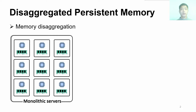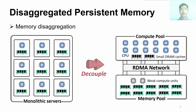To avoid these drawbacks, memory disaggregation decouples the compute and memory resources into independent resource pools. The compute pool contains many CPUs for execution, and the memory pool contains lots of memory modules to store application data. The pools communicate using fast networks such as RDMA.